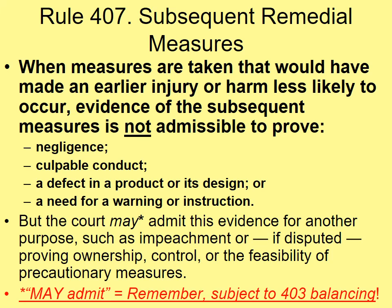The first rule is Rule 407, entitled 'Subsequent Precautions' in the casebook, though the rule itself is called subsequent remedial measures. When measures are taken that would have made an earlier injury or harm less likely to occur, evidence of those subsequent measures is not admissible to prove negligence, culpable conduct, a defect in a product or its design, or a need for a warning or instruction. These are the four forbidden purposes under the rule.